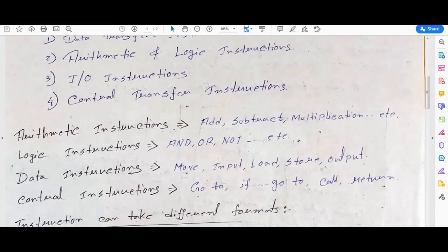Next one is data instruction, which is used for move, input, load, store - these kinds of things. And last one is control instruction, for go to, if, go to, call, return. These kinds of instructions are included in control instruction, meaning instructions for controlling or the instructions given for control are included in control instructions.